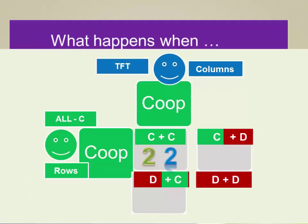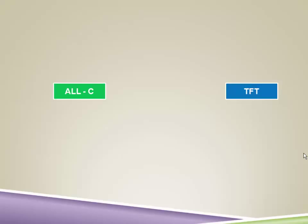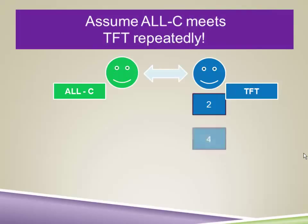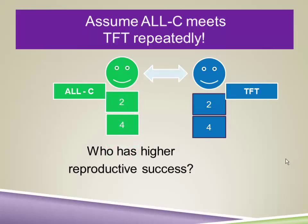What happens when always cooperate meets tit-for-tat? On its first play, tit-for-tat always cooperates, and then does whatever the other strategy does. The first time they meet, they will both cooperate and each get two points. Because always cooperate cooperated on the first encounter, tit-for-tat will continue to cooperate — they'll just keep cooperating as if they were both All-C players, continuing to earn the maximum number of points. If they meet repeatedly, they have equal reproductive success, picking up two offspring per game. Tit-for-tat, when it meets always cooperate, is indistinguishable from always cooperate.